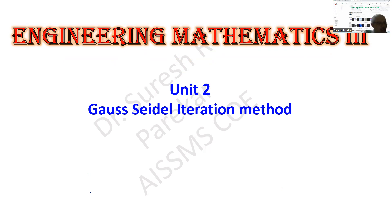So in Gauss-Seidel method, we have a small change if we compare with Jacobi method. In Jacobi method, we consider all values x1, x2, x3 equal to 0 in the first iteration, and then whatever values we get from there, we substitute in the next iteration.